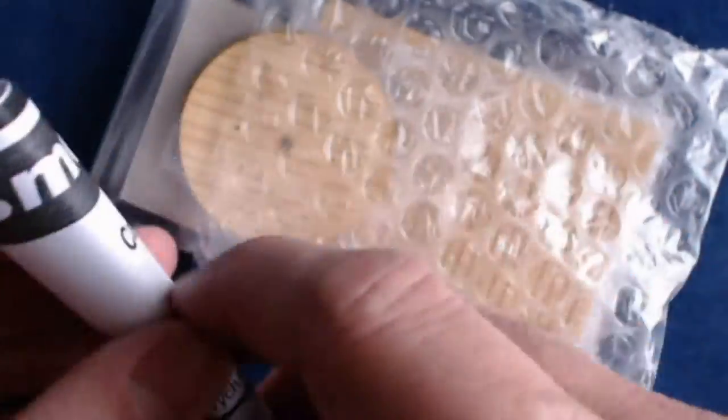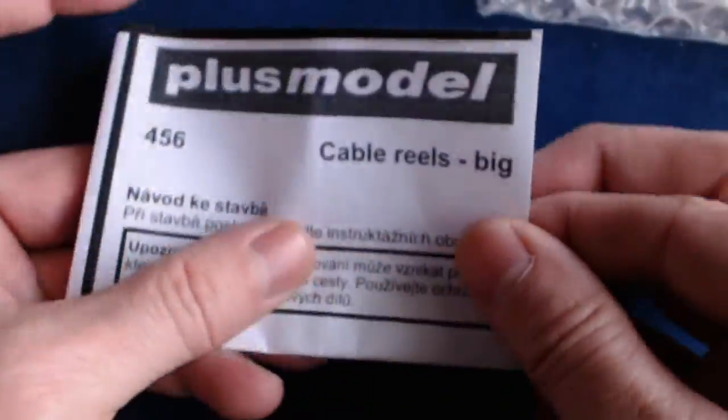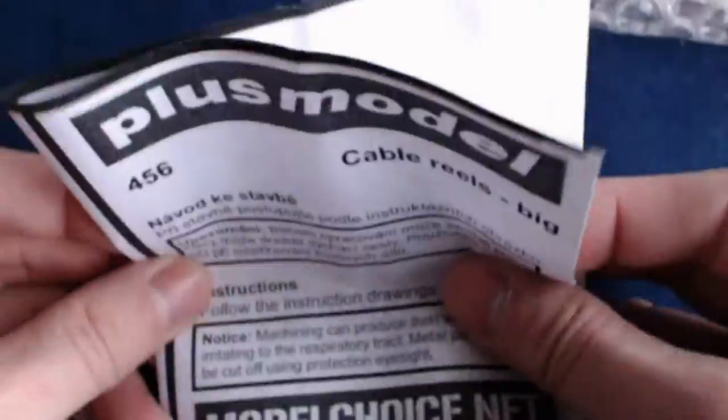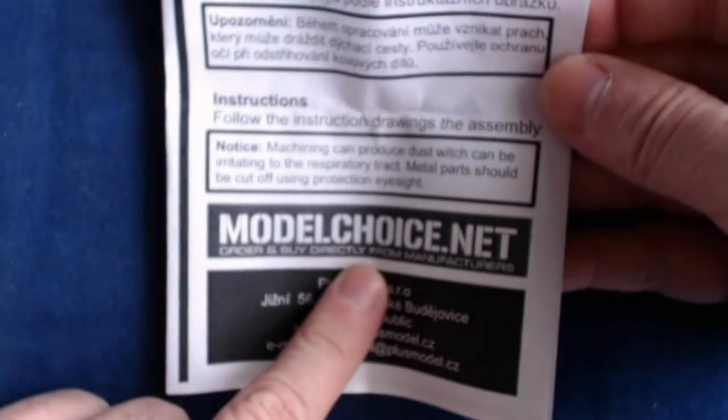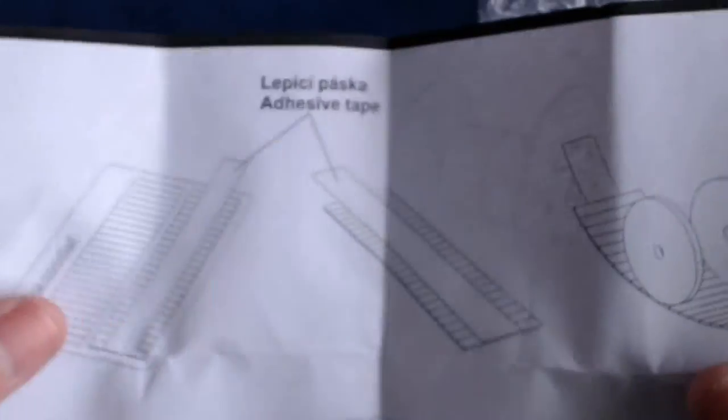So this one again has an instruction sheet with information. You can buy these products direct from the modelchoices.net website, by the way, if you can't find them at your local hobby stores.